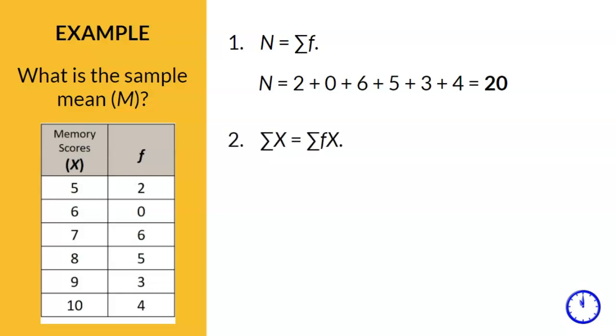Step 2. We need to calculate the sum of X. But we will use the formula sum of X equals the sum of FX because we are using frequency tables. F here is referring to frequency and X is referring to X scores.